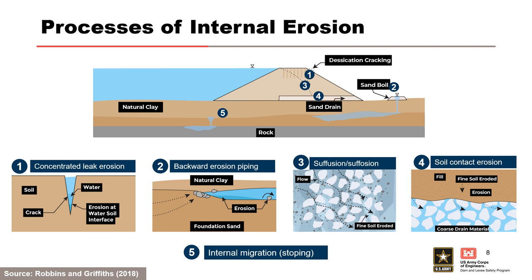ICOLD Bulletin 164 describes a stoping process as global backward erosion and considers this a form of backward erosion; however, there is no consensus on this terminology. USACE added 'soil' in front of ICOLD's term 'contact erosion' to emphasize that this process occurs at the fine-coarse soil contact, not the soil-rock contact. Each process of internal erosion will be discussed in more detail throughout the course. The hydraulic gradient influences the likelihood of initiation and in some cases progression of each of the five internal erosion processes.